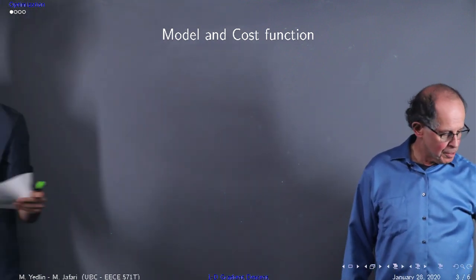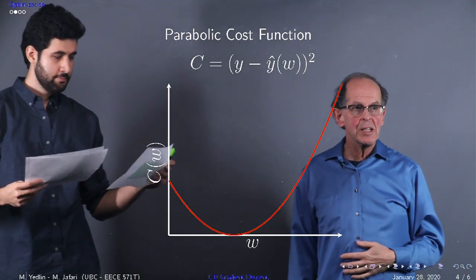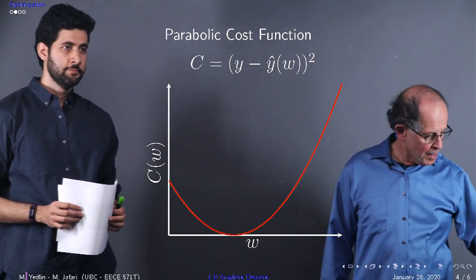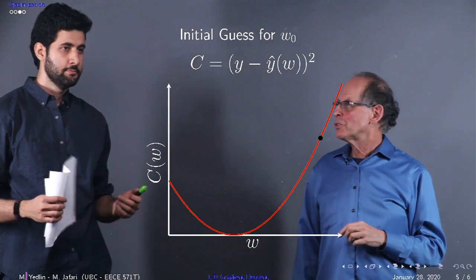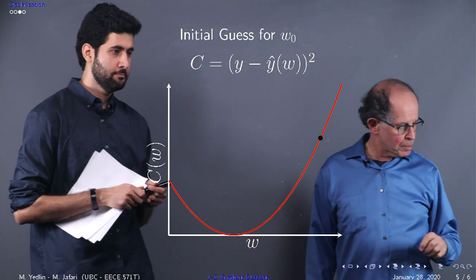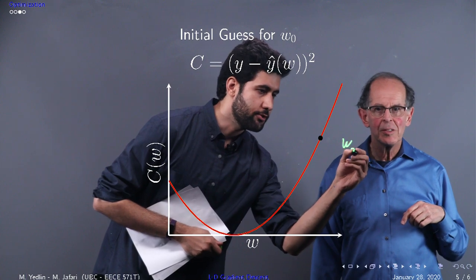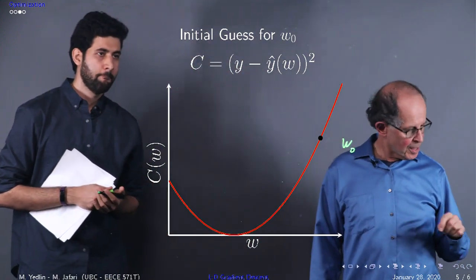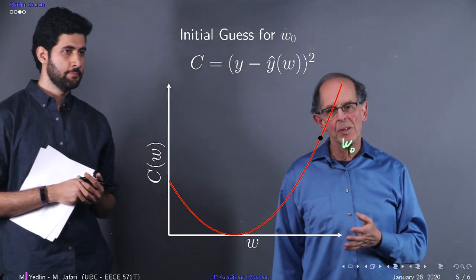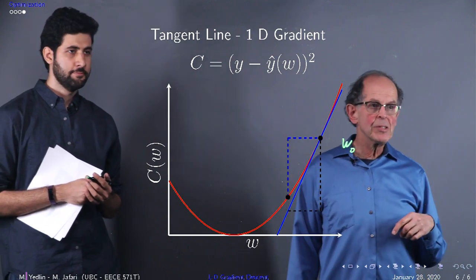Here's the picture of our cost function. There it is, C of w as a function of w. It has a minimum, and we'll start with some initial guess. We want to somehow go down to the bottom of the parabola. We call this point W zero. Now what we want to do is find a way to slide down. This is where it gets very interesting.